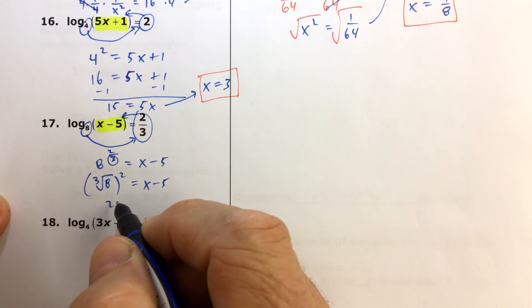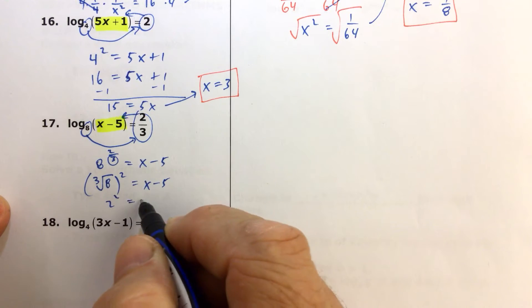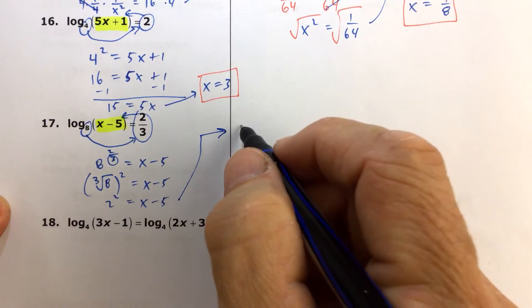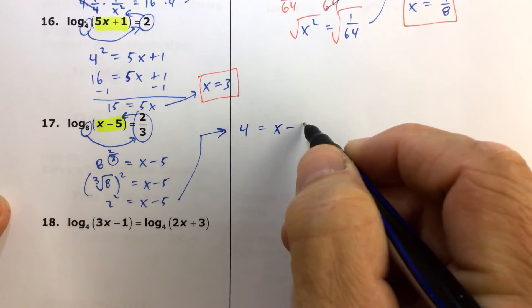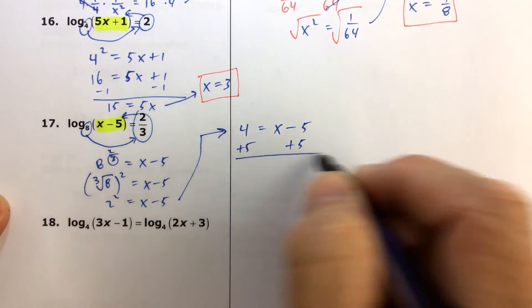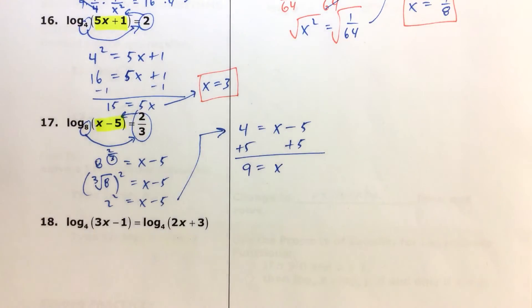Well, the cube root of 8, we know that's 2, and we know that 2 squared is 4, so we'll do that over here. 2 squared is 4, and that's equal to x minus 5. Well, when we add 5 to both sides, we see that x is equal to 9.